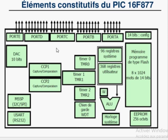La particularité de ce circuit, ce sont les autres interfaces et périphériques absents dans l'ancien. Le nombre de ports a été augmenté : port C, port D et port E. On trouve le convertisseur analogique numérique de résolution 8 bits, deux modules de capture/comparaison permettant de générer un signal PWM, et des interfaces série synchrone et asynchrone.